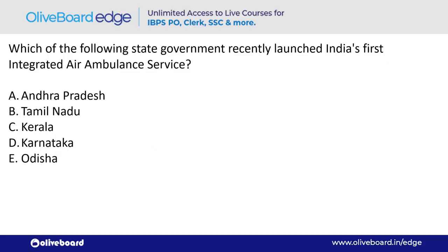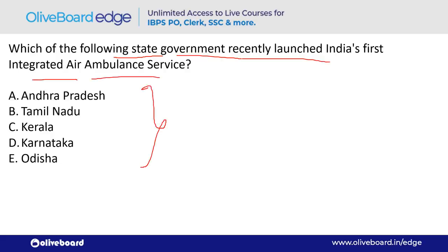Which state government recently launched India's first integrated air ambulance service? The answer is Karnataka — option D.